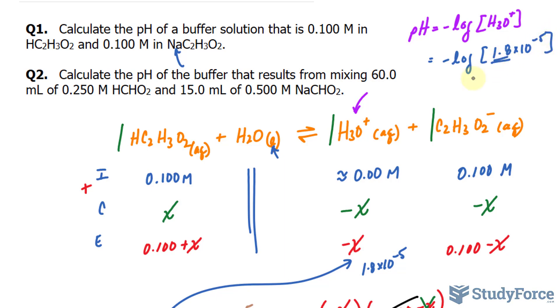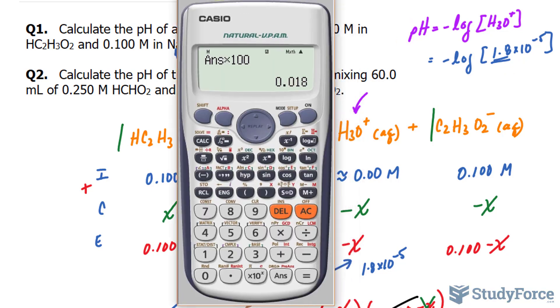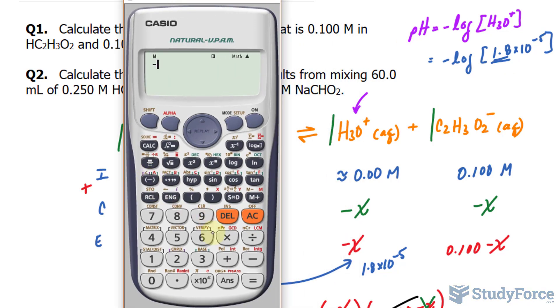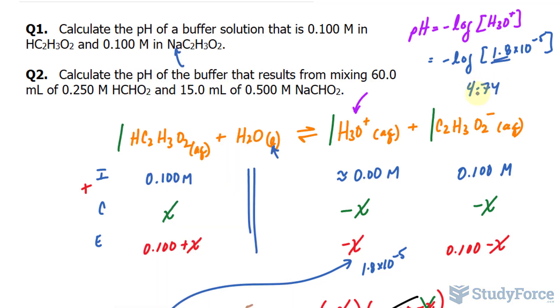Remember, there are two significant figures here, so whatever answer we get after the decimal place, there should be two digits. Negative log of 1.8 times 10 to the power of negative 5 gives us 4.74, and we need two digits after the decimal because there are two significant figures here. 4.74 is the pH of this buffer solution.